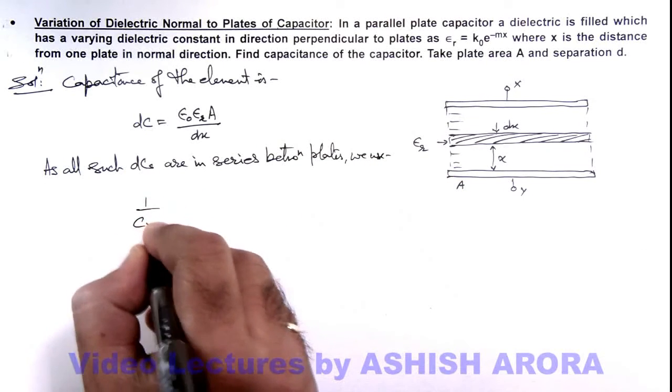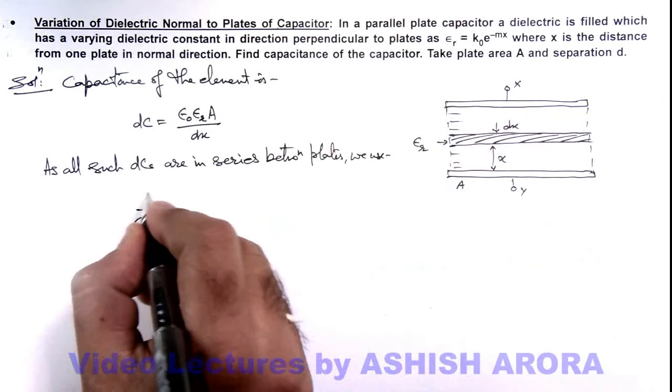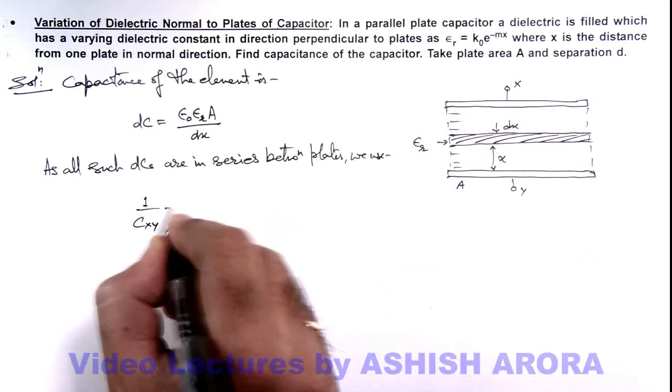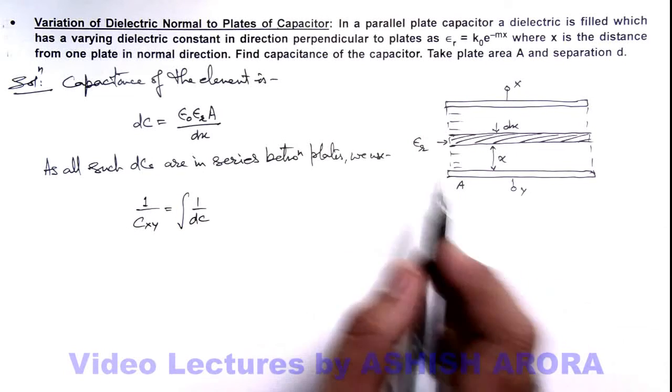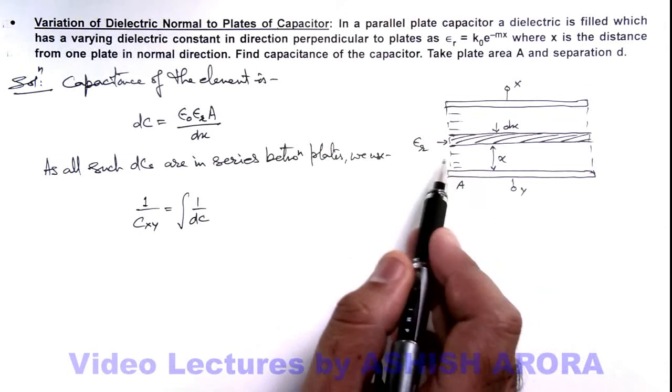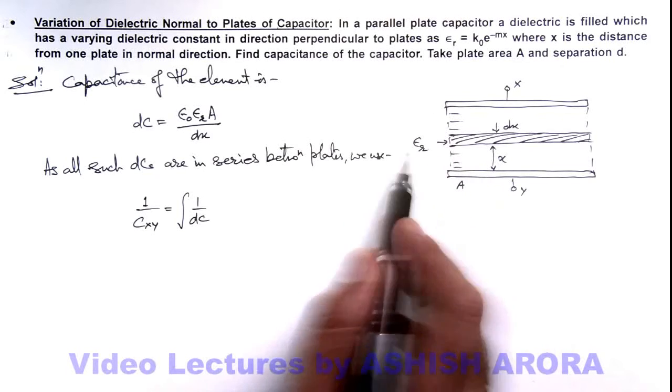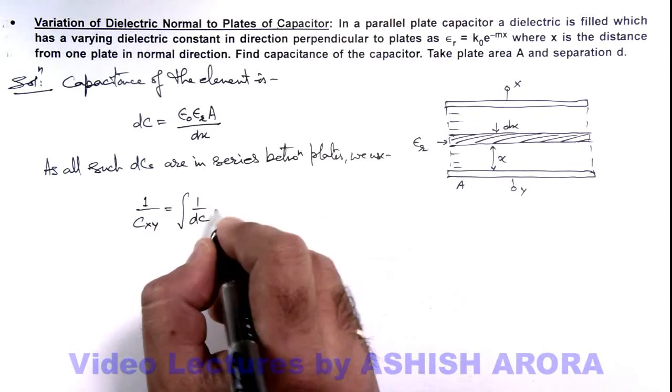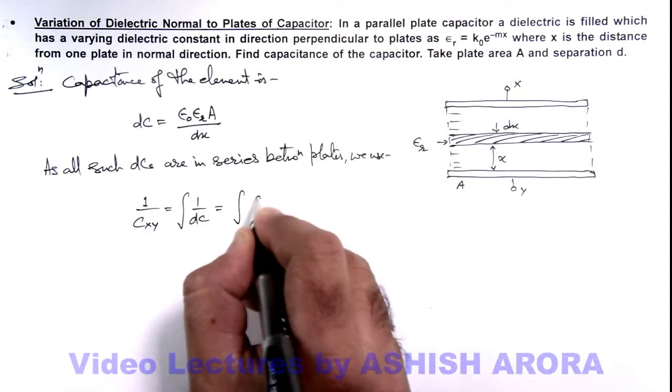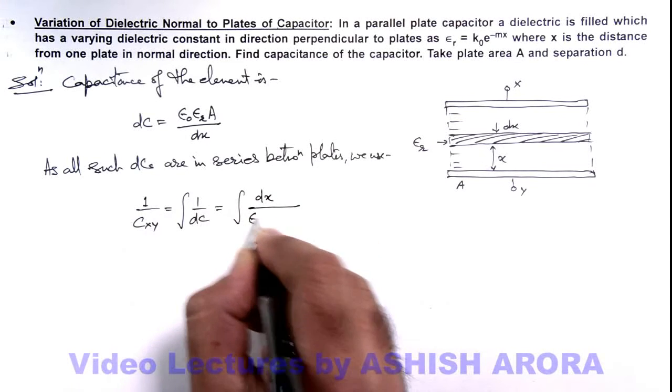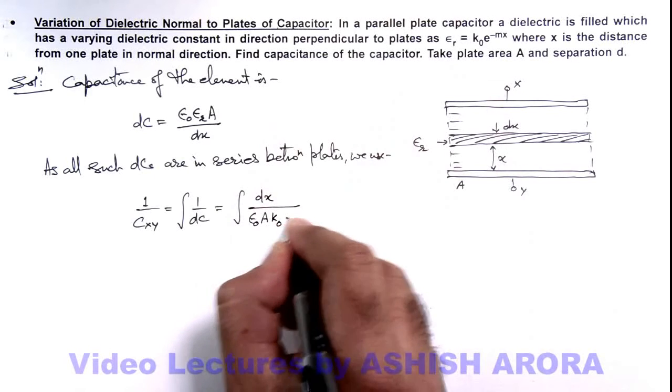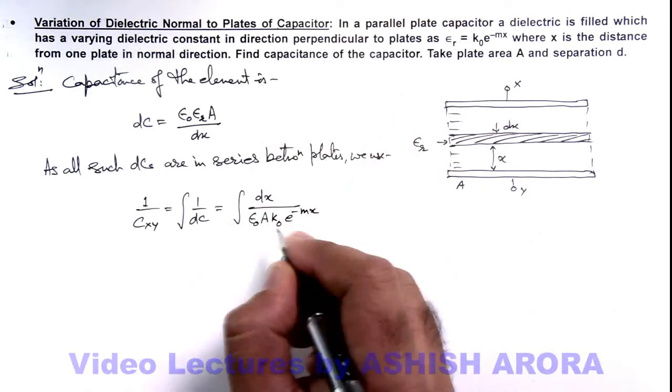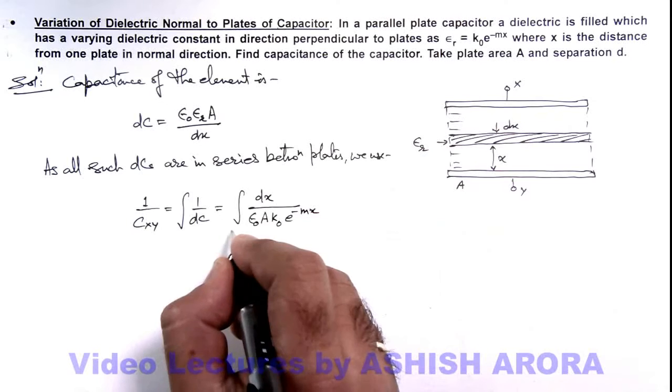Here we can use 1 by C_xy, that is the capacitance across the plates, can be written as integration of 1 by dC. Because if all dC's are in series we can take it as 1 by dC plus 1 by dC and so on. So here this can be written as integration of dx by epsilon_0 A and epsilon_r we can write as k_0 e to the power minus mx, and we integrate the value of x from zero to d.